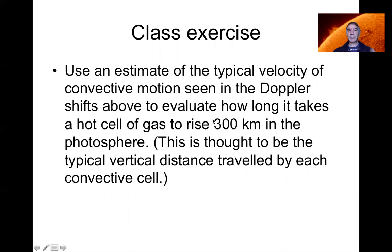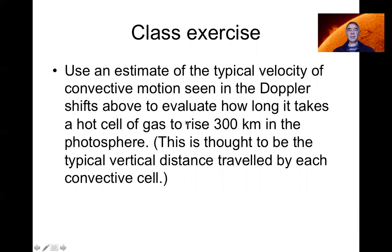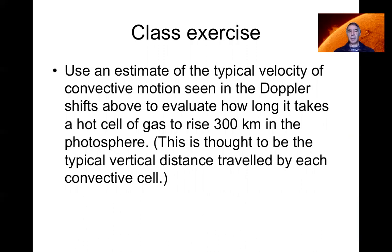I'll leave you with an exercise. A few slides back we had that picture of Doppler shifts due to granulation, showing how fast the gas moves up and down due to convection. I'd like you to estimate — there's no single right answer, just a sensible range — how long it would take for gas moving at the speeds indicated by those Doppler shifts to travel a distance of about 300 kilometers, which is roughly how far these rising bubbles travel before dispersing. This gives you a feel for the timescales of the dynamics in the outer layers of the sun.